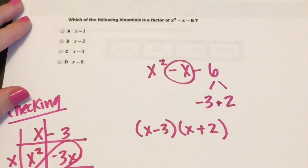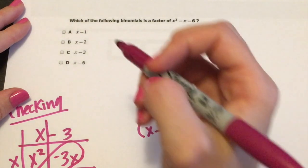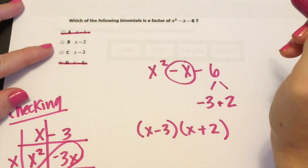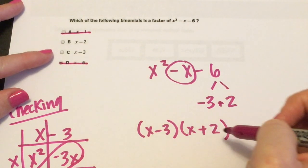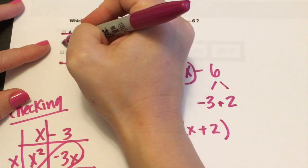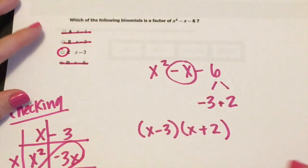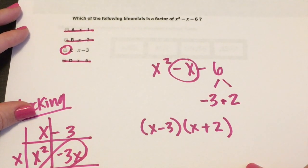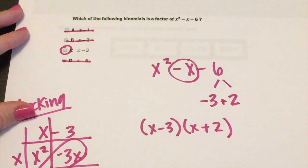So now we go back up to our answer choices. Negative one is not an option. Negative six. So we have a negative three and a positive two. So positive two is not there. So it has to be C. I'm going to do a whole video series on factoring different ways to factor. And I will link it below.